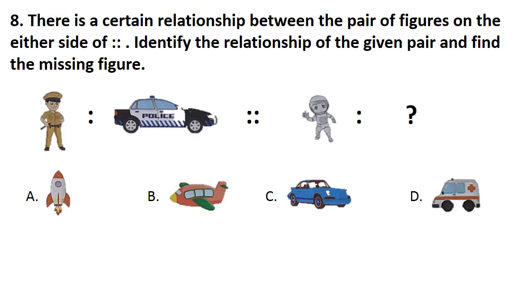Question No. 8. There is a certain relationship between the pair of figures on the either side of double colon. Identify the relationship of the given pair and find the missing figure. Look at the figures carefully. In the question, if policeman is related to police car, then astronaut is related to? Answer is Option A. That is rocket.